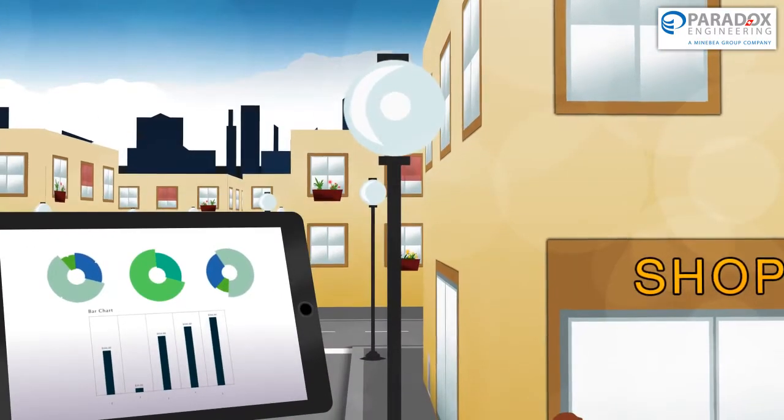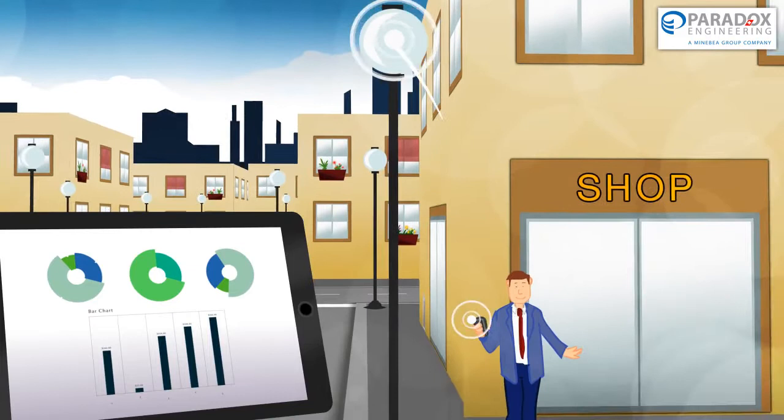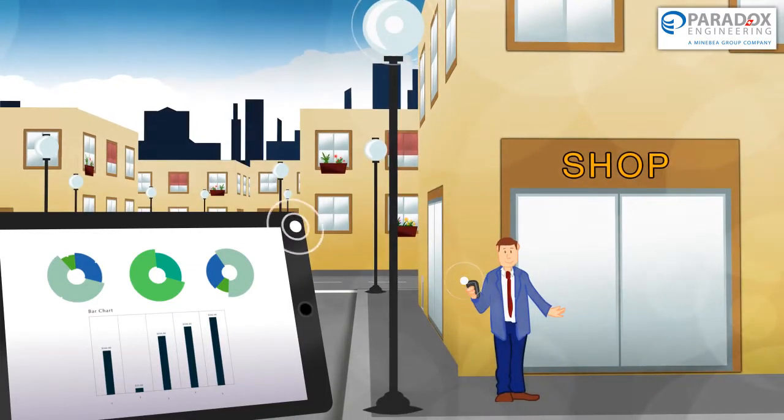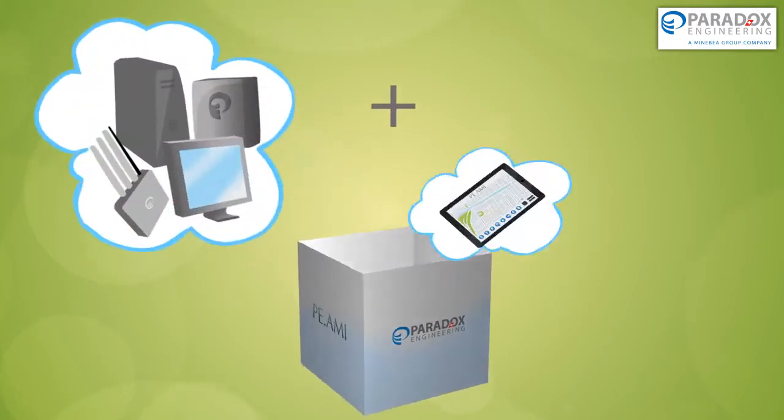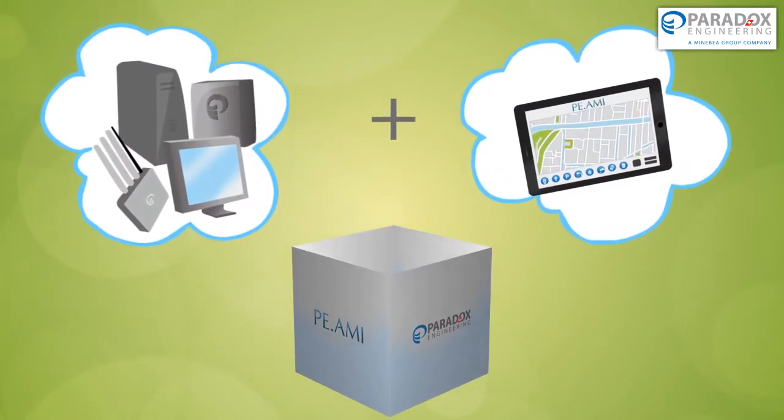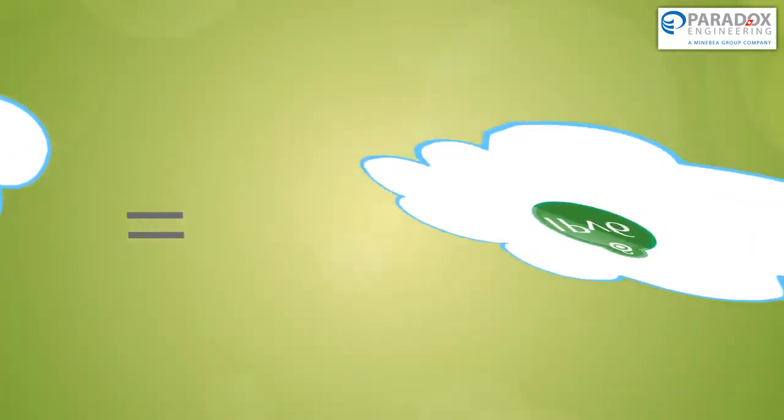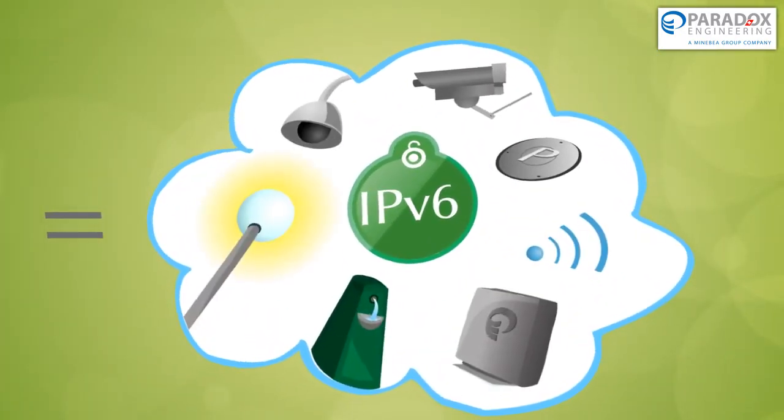Field devices can be monitored and managed from remote and feed real-time information flows towards users and citizens. PE-AMI provides an end-to-end hardware and software solution to build a reliable IPv6 6LoWPAN network to connect any existing or future urban object.